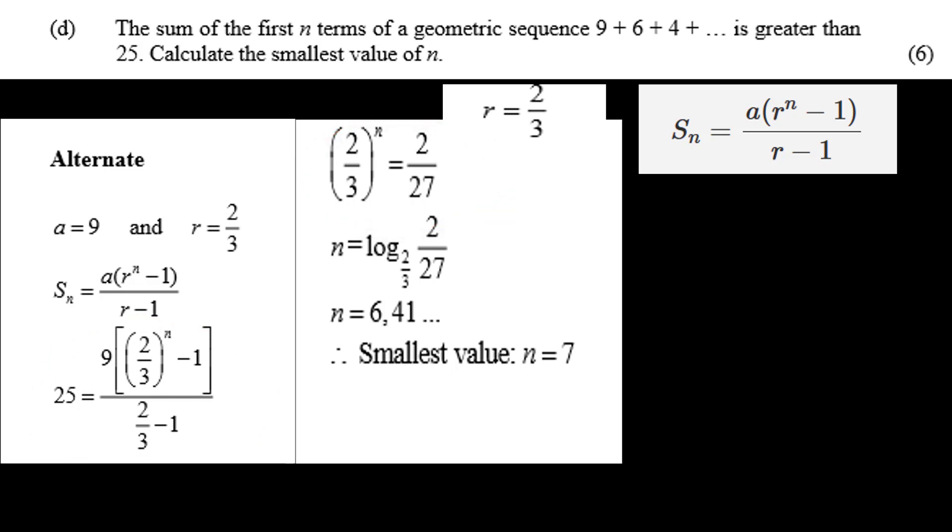Then using the log of 2 over 3 of 2 over 27, solve for N, and this gives N equals 6.41. Or the first whole number that gives us Sn greater than 25 is 7.